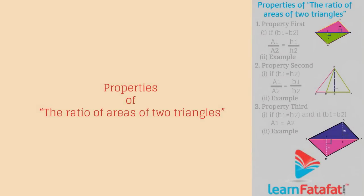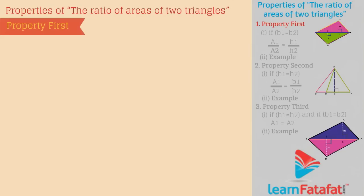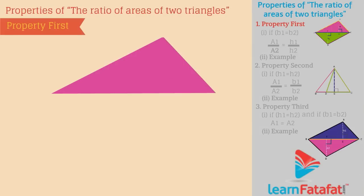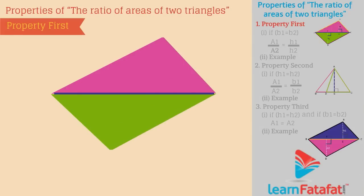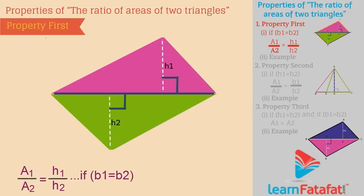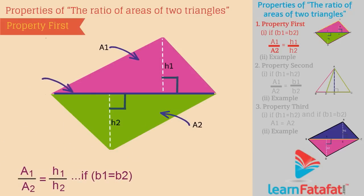Properties of the ratio of areas of two triangles. First, the ratio of areas of two triangles having common or equal base is equal to the ratio of heights of the two triangles. That is, A1 divided by A2 is equal to H1 divided by H2, if B1 is equal to B2.